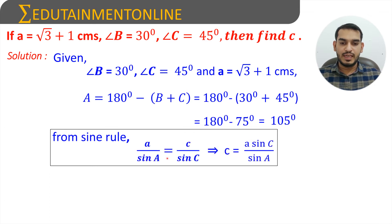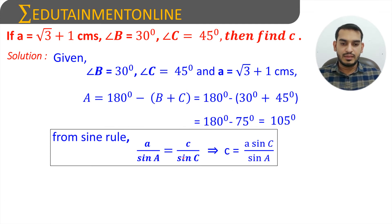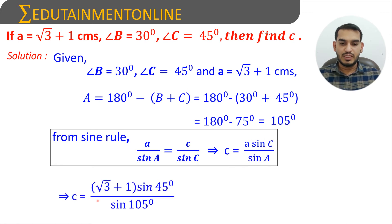We know the sine rule which is a/sin A equals b/sin B equals c/sin C equals 2R. Here we will take a/sin A equals c/sin C and transposing, c will be a·sin C by sin A. We will find the value of c by substituting the remaining values. c is equals to a which is root 3 plus 1, and sin C is sin 45 degrees because angle C is 45 degrees, and sin A, since angle A is 105 degrees, so sin 105 degrees.